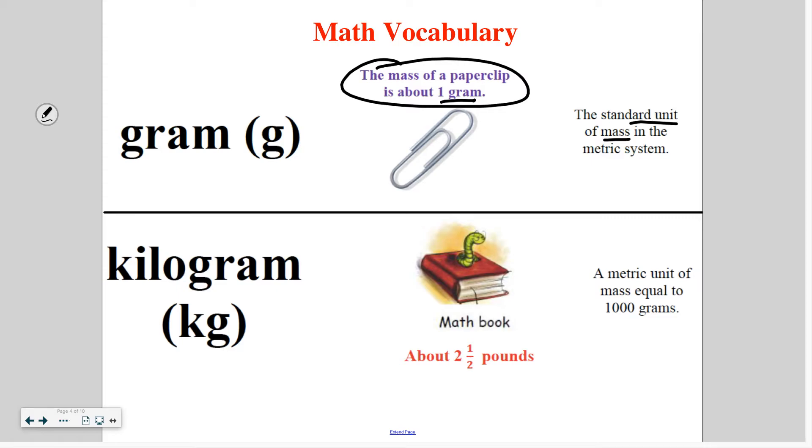A kilogram is another unit of mass and it equals a thousand grams. So one kilogram is equal to a thousand grams. So it's definitely much heavier. So anything that's a one kilogram is equivalent to about a thousand paperclips.